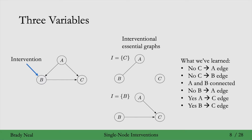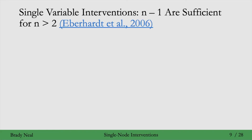In the generalization to n variable graphs, n minus 1 interventions are sufficient to identify the graph, when n is greater than 2. In the 2 variable case, we saw that we needed 2 interventions. In the 3 variable case, we also saw that we needed 2 interventions. And here we're saying that's general — what we see in the 3 variable case turns out to be what we would see in the n variable case.